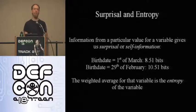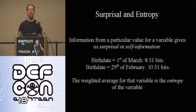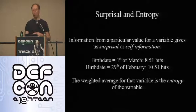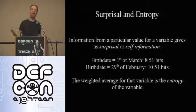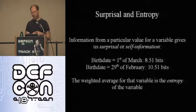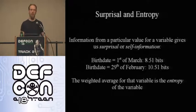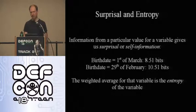If you learn that my birth date is the 29th of February on a leap year, you get a bit more information, because the likelihood of that is only a quarter of what it would be for any other birthday — so you get 10.51 bits. We call that first measurement the surprisal or self-information of a fact you've learned.